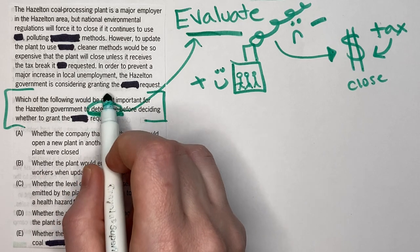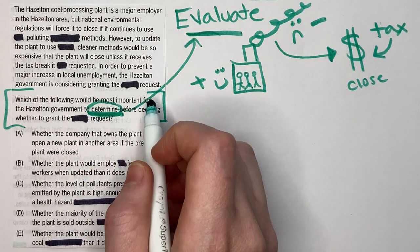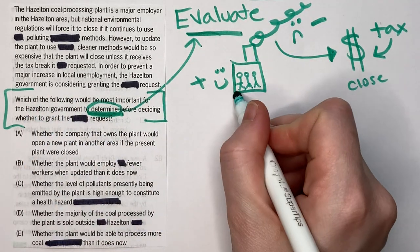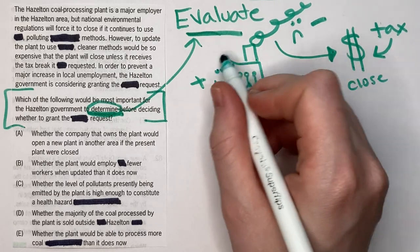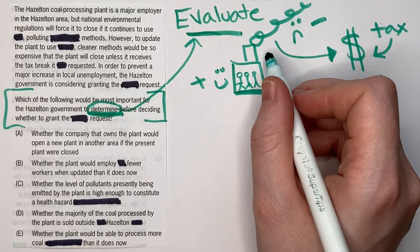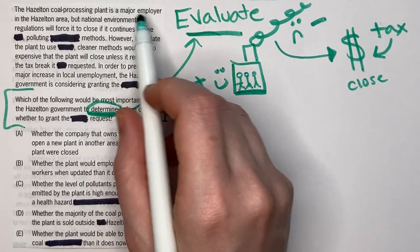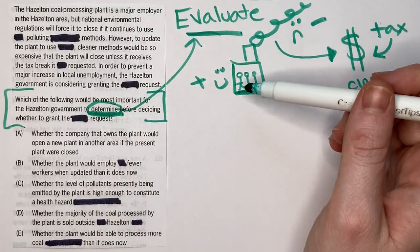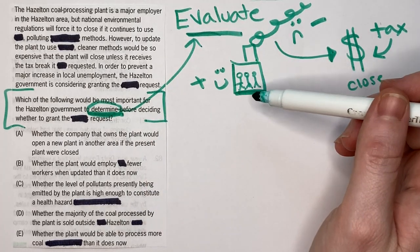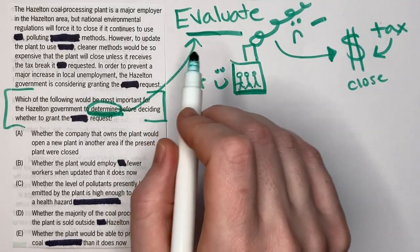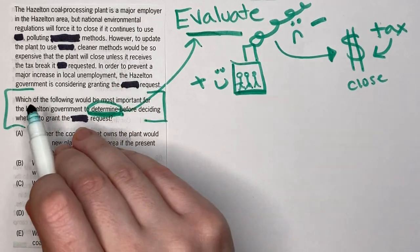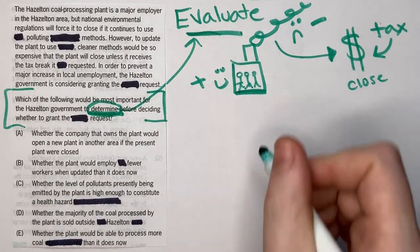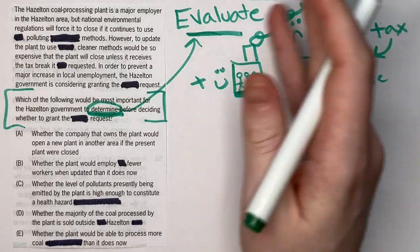The Hazleton government is considering granting the request in order to prevent a major increase in local unemployment. Interestingly, we already know it's a major employer, but this last sentence doubles down — it says 'in order to prevent a major increase in local unemployment,' which introduces an assumption.